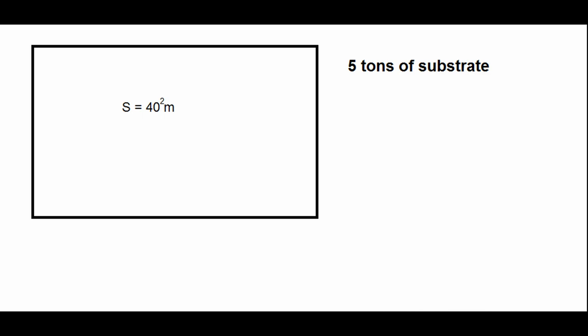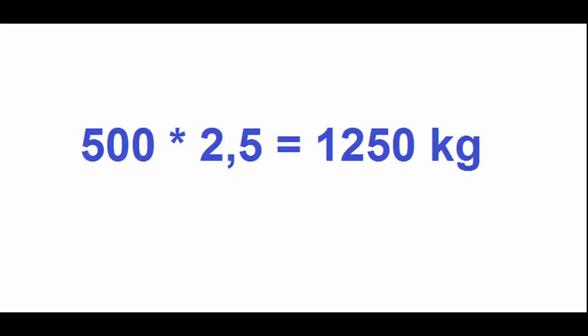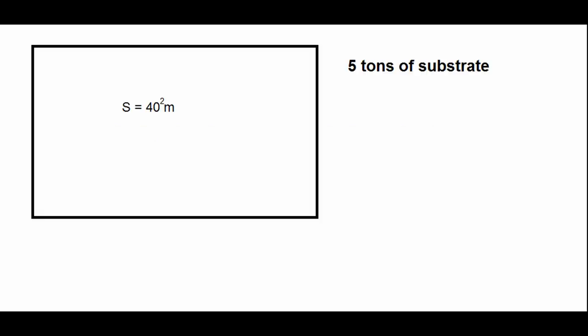Now imagine that you have a room of 40 square meters which can hold 5 tons of substrate — that is, 50 ten-kilogram blocks. If we collect an average of 2.5 kilograms of oyster mushrooms from each block, does this also mean that we can collect 1,250 kilograms of oyster mushrooms from this premises in a month? And the second very important question is: how much substrate do we need to make per month to completely fill the room? It would seem that the room holds 5 tons of substrate, which means we also need to make 5 tons of substrate per month.